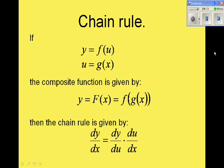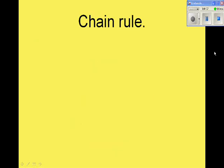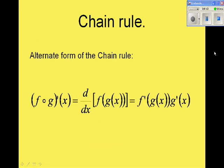This expression means that the derivative of y with respect to x is equal to the derivative of y with respect to u, multiplied by the derivative of u with respect to x. The chain rule can be written in an alternate form, which indicates that the outer function f evaluated at the inner function g is differentiated first, and then the result is multiplied by the derivative of the inner function.